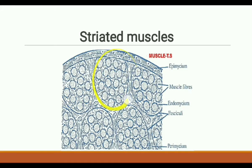Striated muscle bundles are known as fasciculi or fascicles. Each fasciculus has a swollen middle portion called the belly and two narrow ends. The end that attaches to the more movable bone is called the point of insertion. During muscle contraction, the more movable bone is pulled towards the less movable bone.